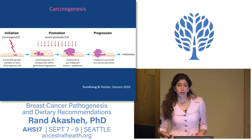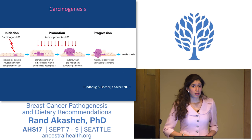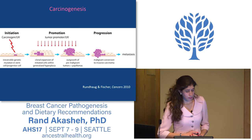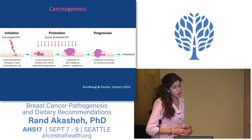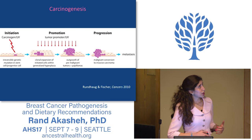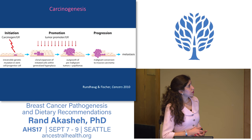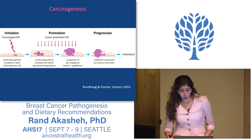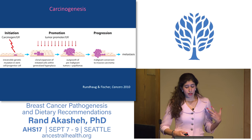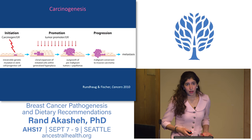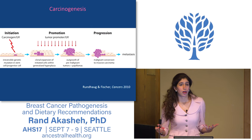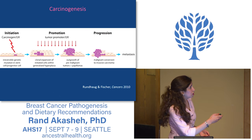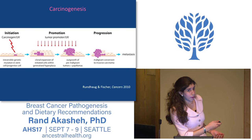The most common promoting factors we know about are hormones. I'm going to talk a lot today about estrogen, insulin, and insulin-like growth factors as promoting factors for breast cancers. After a number of mutations have accumulated in those cells, progression occurs, meaning we now have a malignant tumor ready to invade other tissue and metastasize. This is kind of the framework for every cancer, but with every cancer there's a different player.